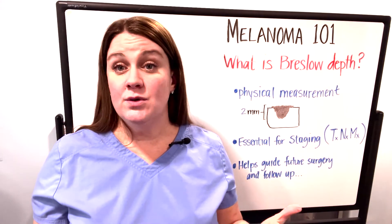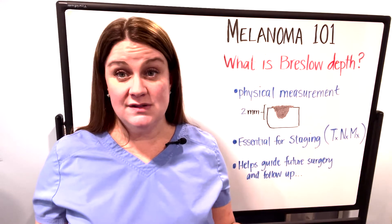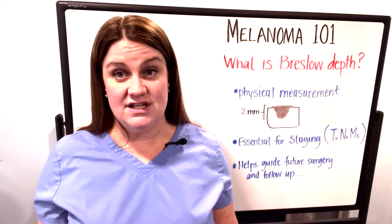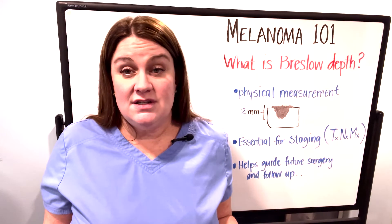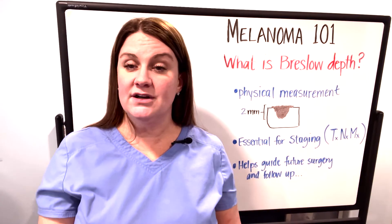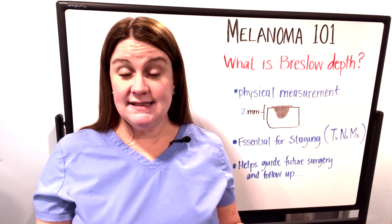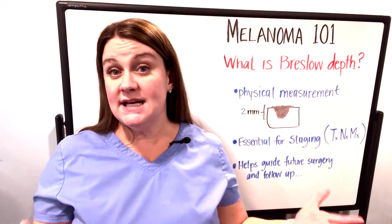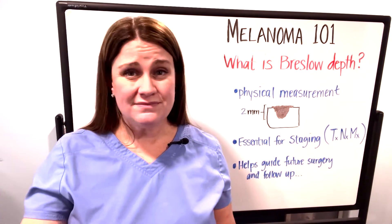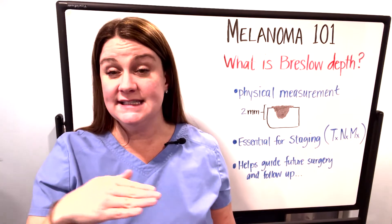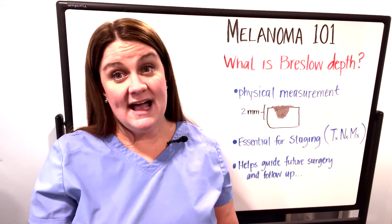Something like melanoma in situ actually doesn't have a Breslow depth because there is no invasion down into the skin, so there would be no measurement. There would just be one single layer of abnormal melanocytes, which would be an indication of a melanoma in situ. Melanoma in situ is very literally sitting in the epidermis only, so they don't really have a depth.